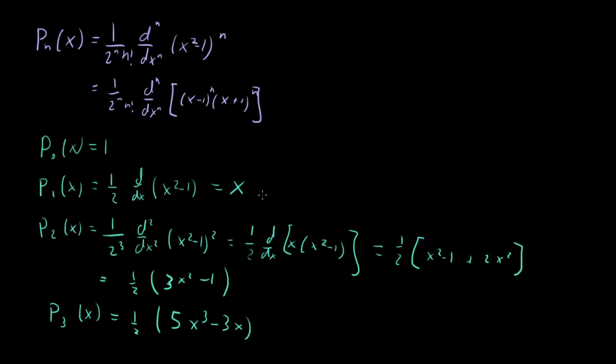The other thing that we see is that the highest order of the polynomial is n. So for P sub 3, the highest order term in the polynomial is x^3. For 2, it's x^2. For 1, just x. So we can instantly tell the degree of the polynomial just from that value of n.